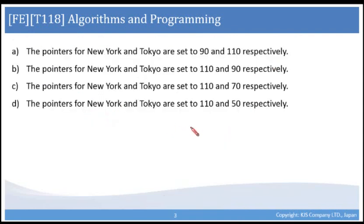Here we have the options for what we will set the pointers to on the previously shown linked list. The pointers for New York and Tokyo are set to 90 and 110 respectively, or the pointers for New York and Tokyo are set to 110 and 90 respectively.